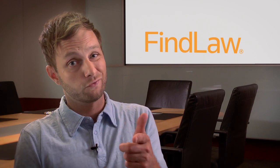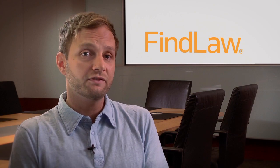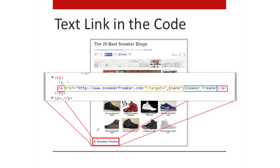Here's what a text link looks like in code using an example page — the 20 best sneaker blogs. There's a link to the number three blog, Sneaker Freaker. You have the opening and closing A tags, the href pointing to sneakerfreaker.com as the destination URL, the anchor text 'Sneaker Freaker' rendered next to the number three on the page, and target equals blank which opens the link in a new tab or window.